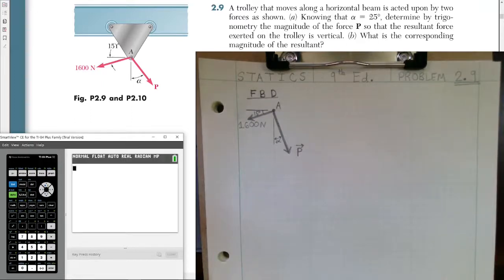A trolley that moves along a horizontal beam is acted upon by two forces, as shown. Part A asks, knowing that alpha equals 25 degrees, determine by trigonometry the magnitude of the force P so that the resultant force exerted on the trolley is vertical. Part B asks, what is the corresponding magnitude of the resultant?